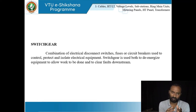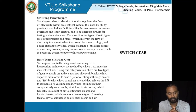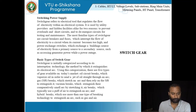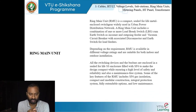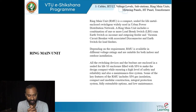Switchgear can be imagined as a complicated switch. There are basic types of switchgear covered here; we will come back to some of these in module three on protective devices. A Ring Main Unit is a compact, sealed-for-life, metal-enclosed switchgear widely used in urban power distribution networks. It includes a combination of load break switches, earth switches as incomer or outgoing feeders, vacuum circuit breakers with associated disconnectors and earth switches for load feeders, available in different voltage ratings.